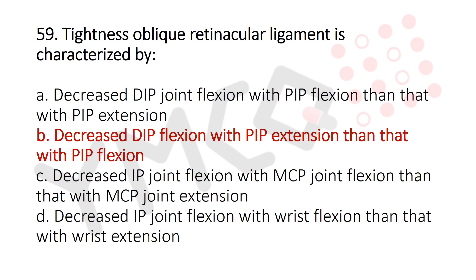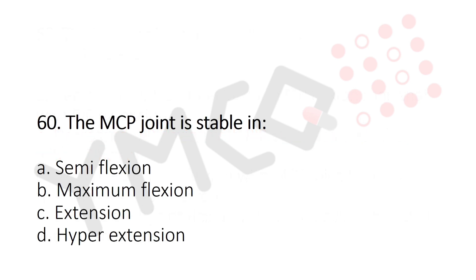Question 60: The MCP joint is stable in — Option A: semi flexion, Option B: maximum flexion, Option C: extension, Option D: hyperextension. The answer is Option B, maximum flexion.